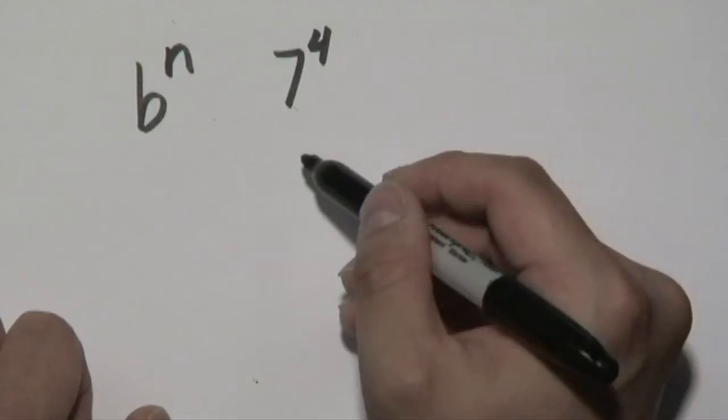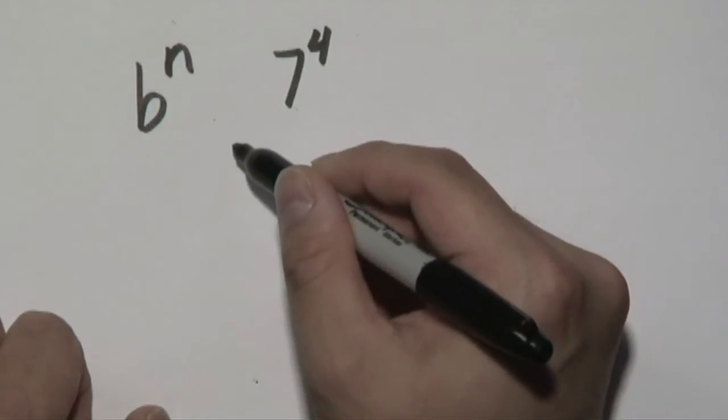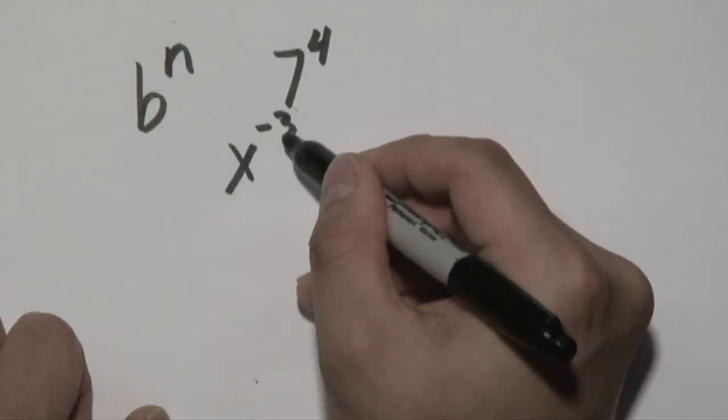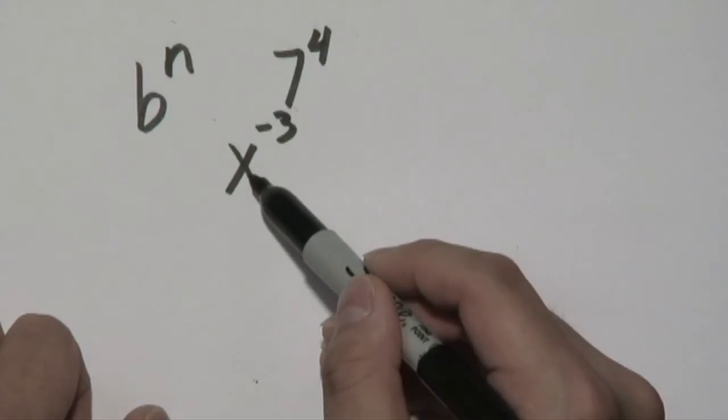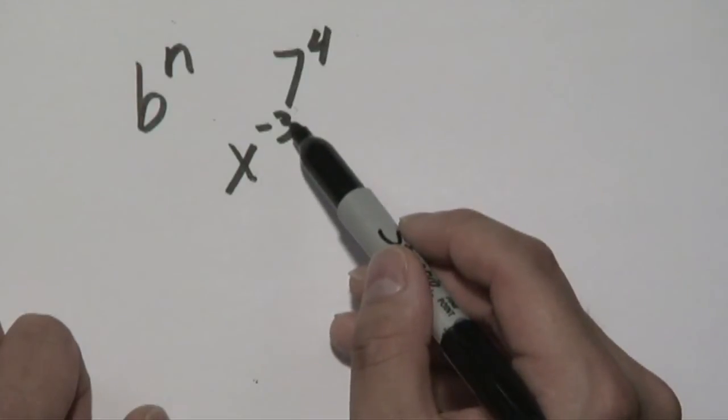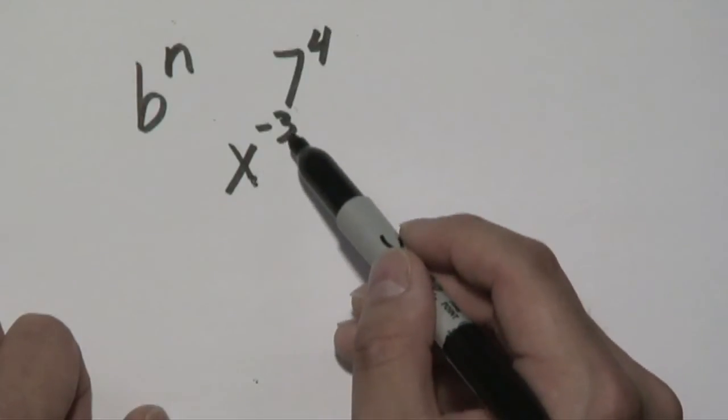Now if you have something like x to the negative 3, that means x will be your base and negative 3 is the exponent. That's why they say x to the negative 3 power.